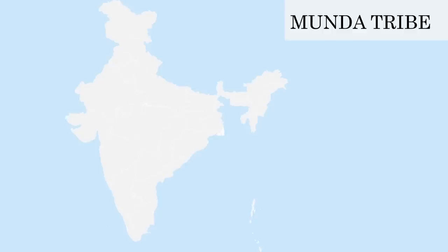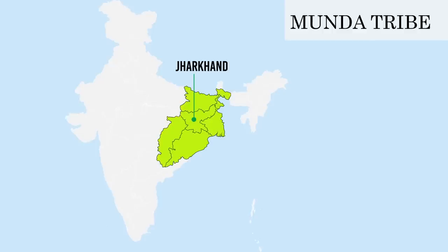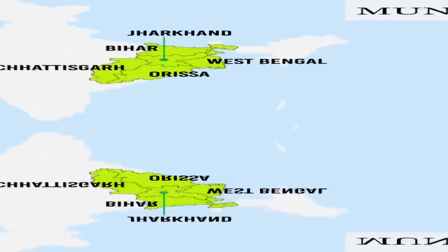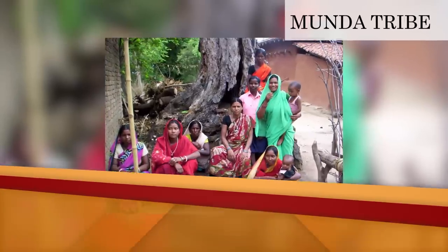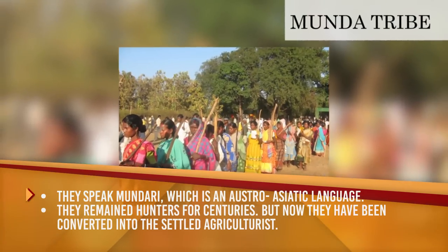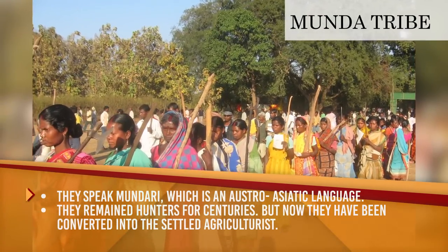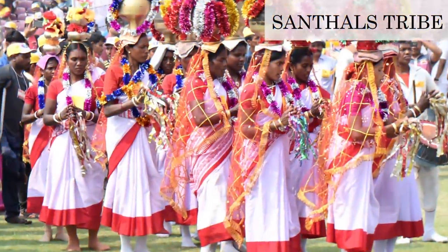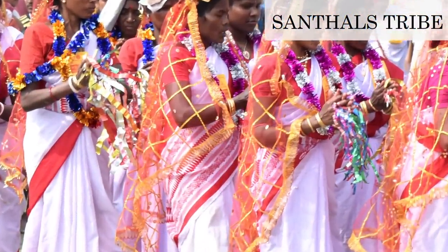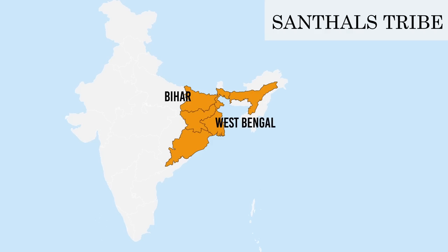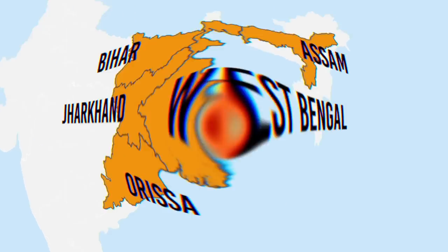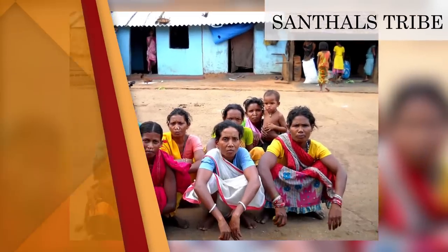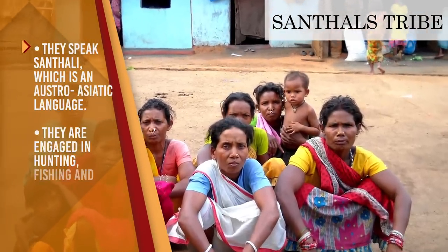Munda Tribe: they are mainly found in Jharkhand but are also spread across Bihar, West Bengal, Chhattisgarh and Orissa. They speak Mundari, which is an Austro-Asiatic language. They remained hunters for centuries but have now been converted into settled agriculturists. Santhal Tribe: it is one of the largest tribes in India, found in West Bengal, Bihar, Orissa, Jharkhand and Assam. They speak Santhali, which is also an Austro-Asiatic language.